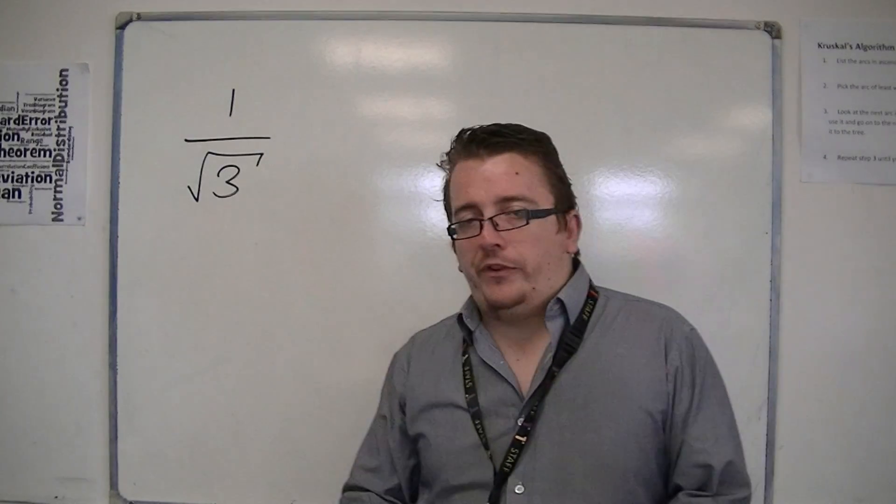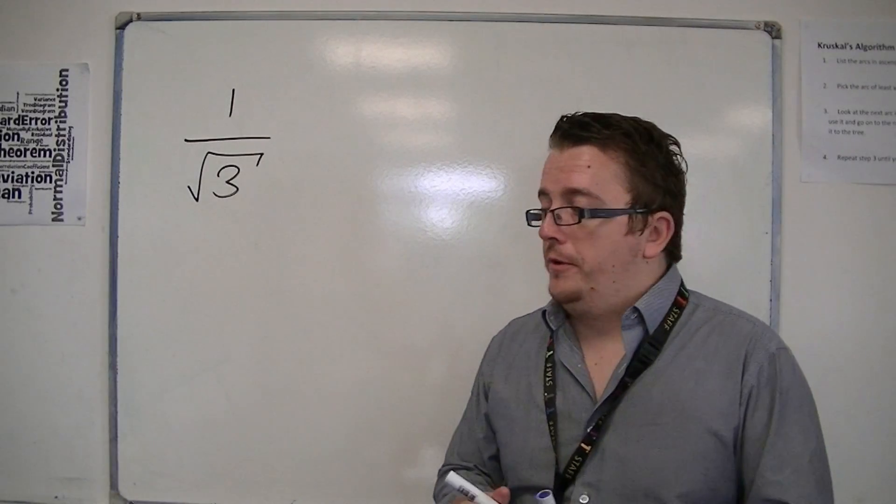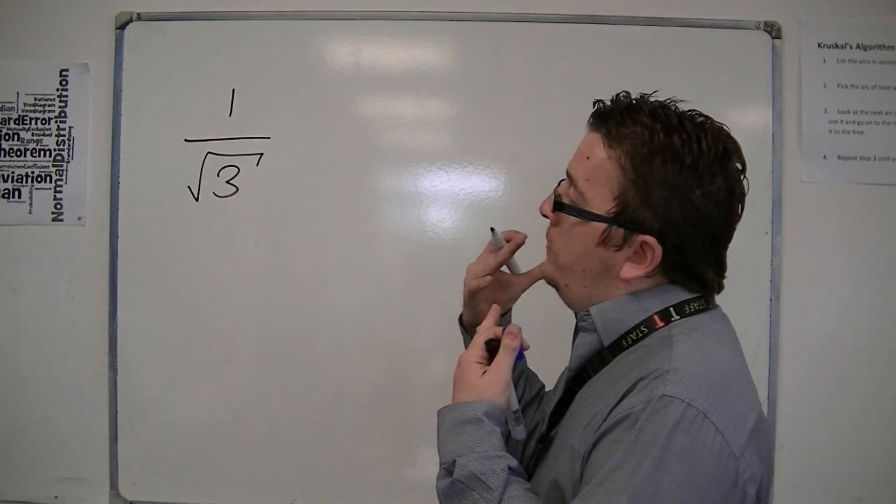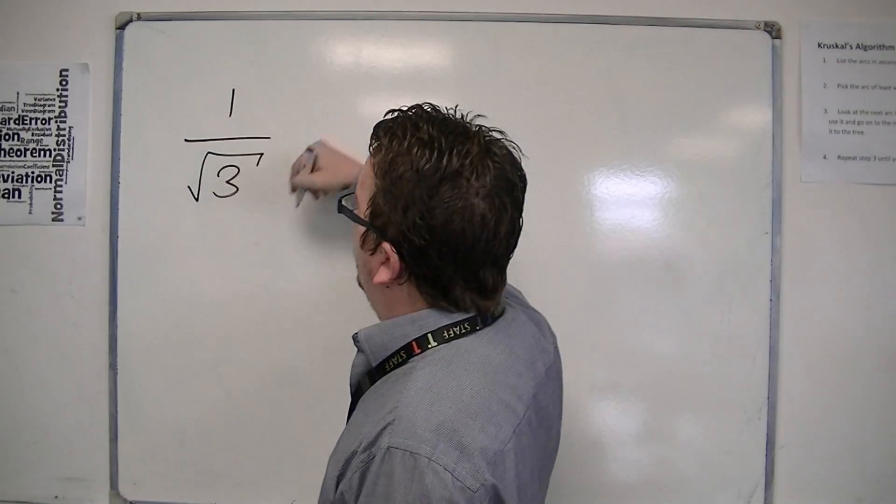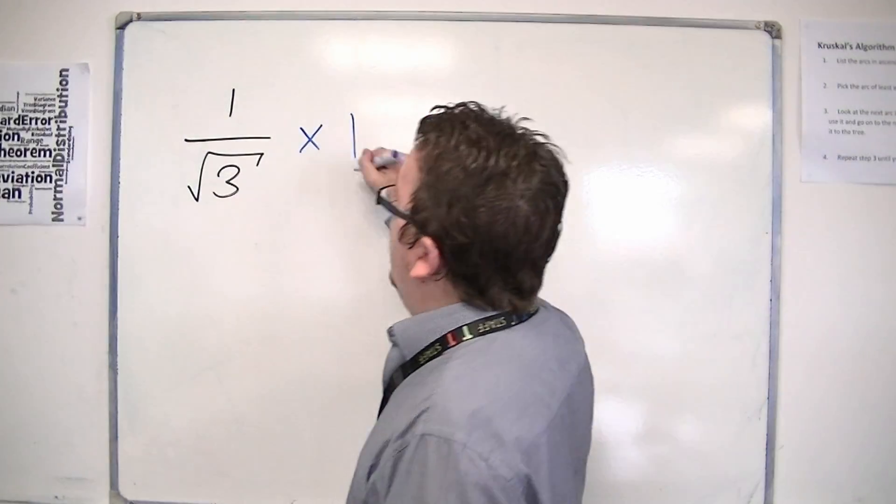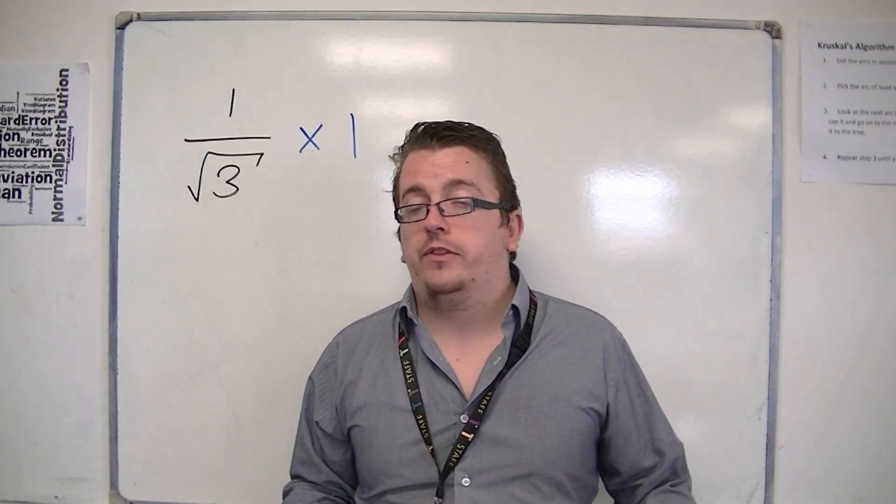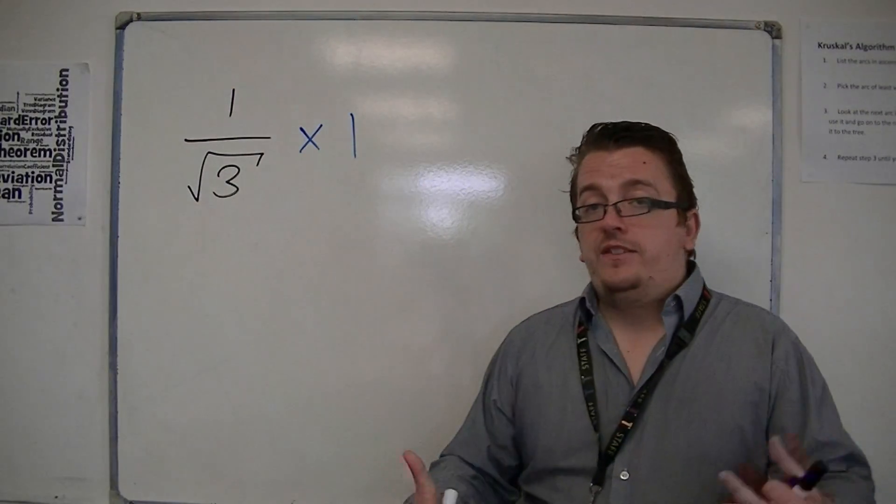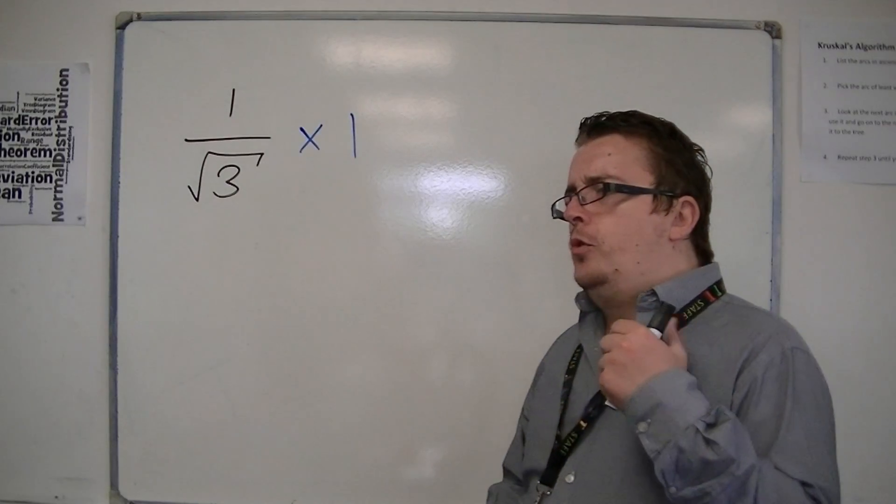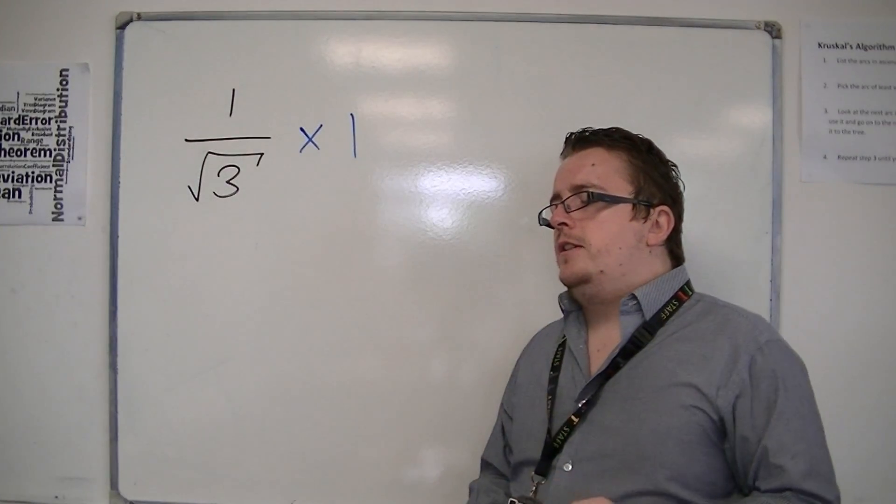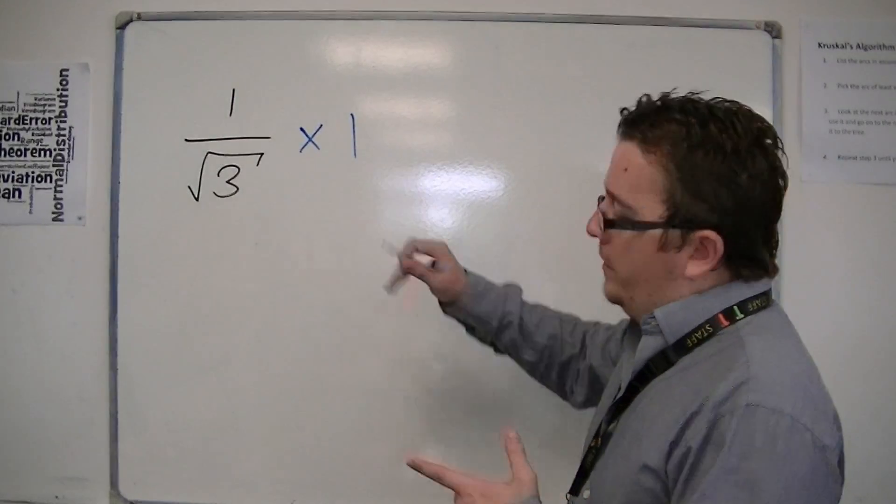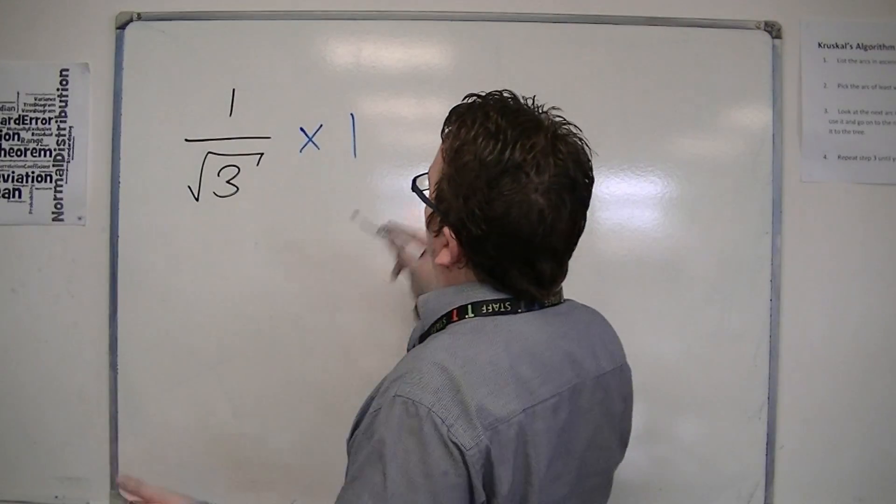So the process is quite straightforward. I'm pretty sure all of you will agree that if I write this as 1 over root 3 times 1, then I have actually changed nothing. If I multiply a number by 1, it doesn't change.